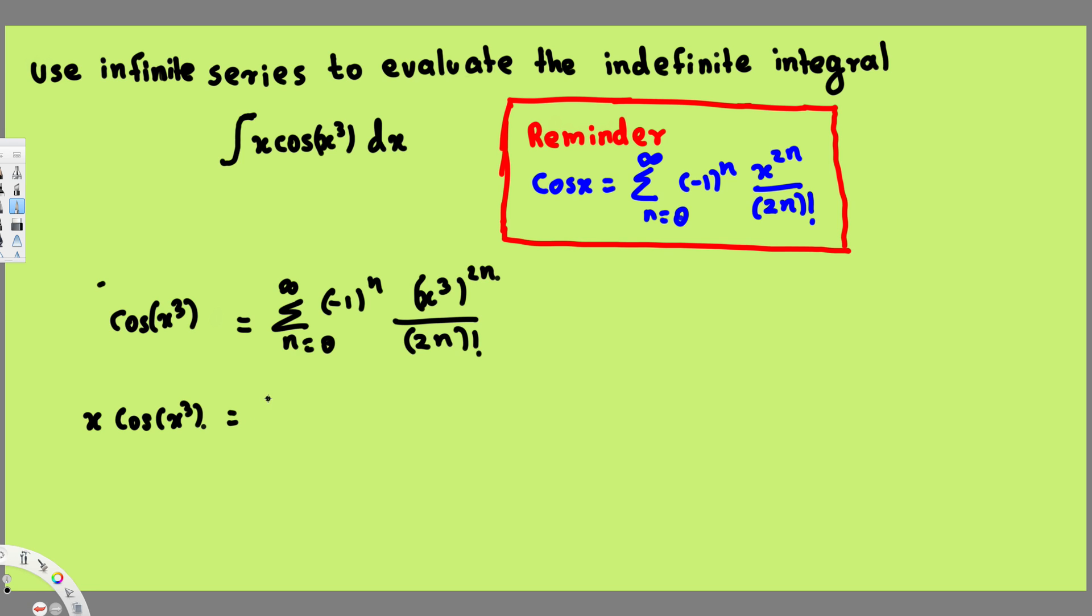So here what we can do is multiply front or back, it doesn't matter where you multiply. Now let's make this one clear - let's put a bracket and multiply: n equals 0 to infinity, (-1)^n.